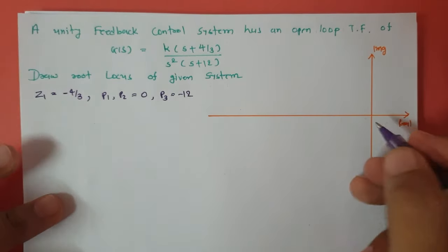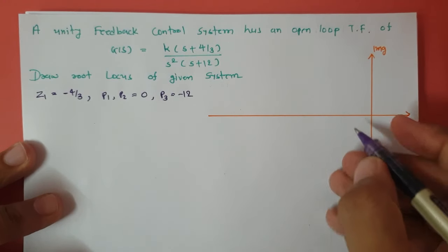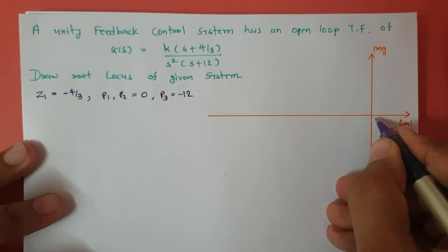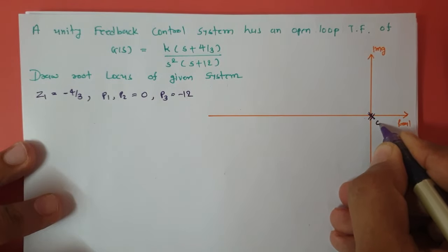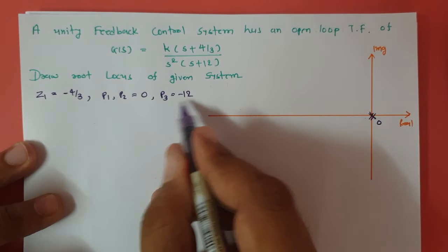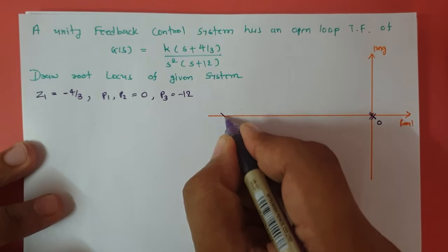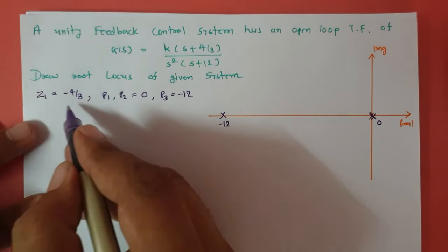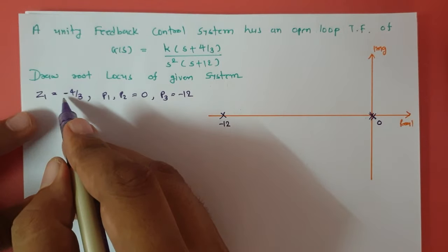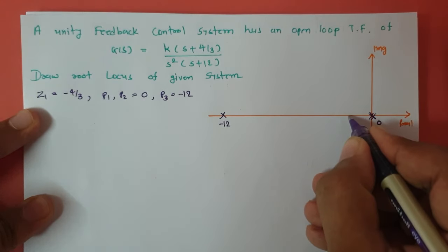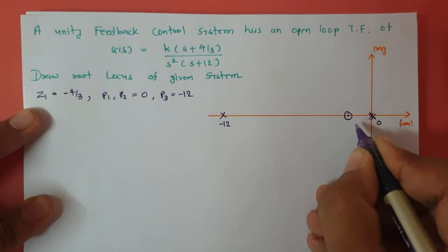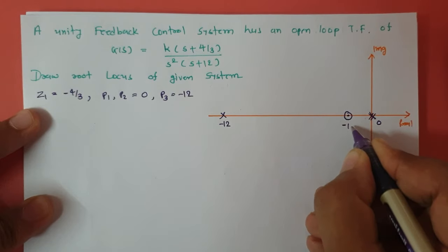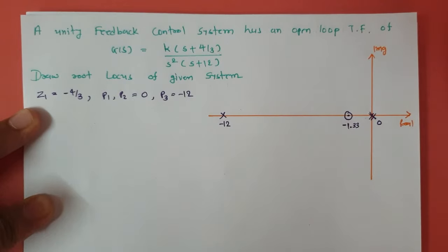I will place those poles and zero locations in the root locus diagram. There are two poles right at zero, one pole at minus 12, and one zero at minus 4/3, which is approximately minus 1.33.